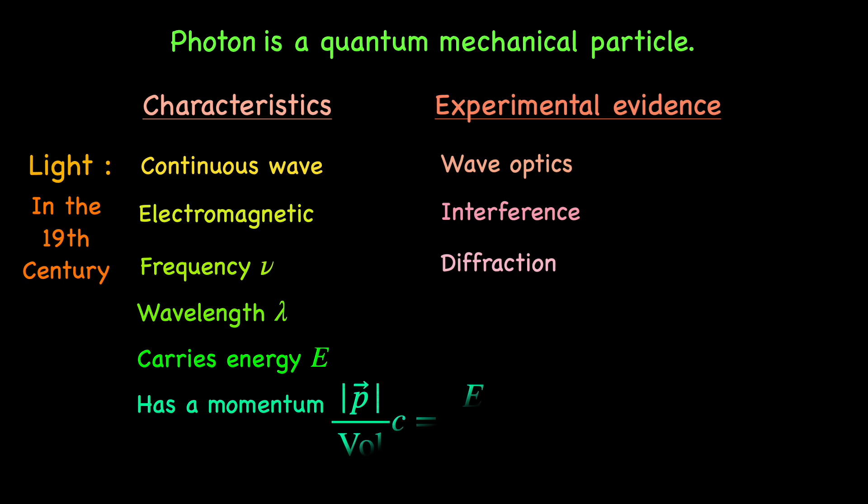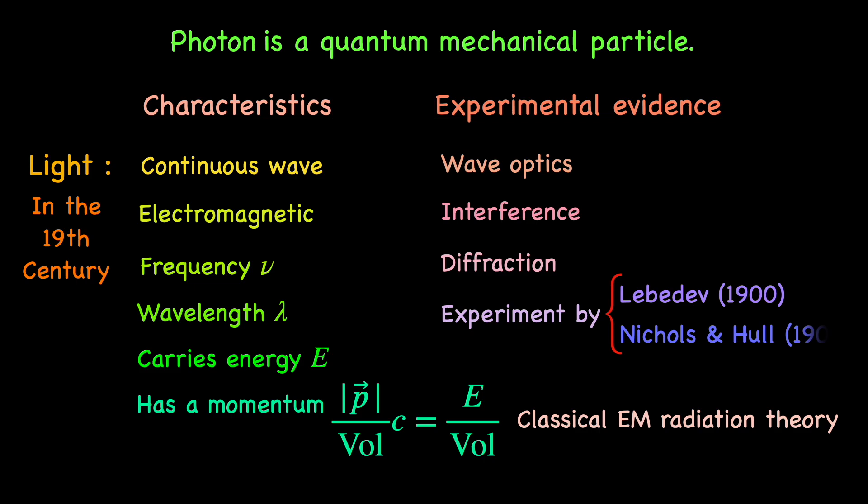energy and momentum content in unit volume of the beam, derived using classical theory of radiation, was experimentally verified in the year 1900 itself. It's just that there was no notion of photon, the quantum mechanical light particle, back then.